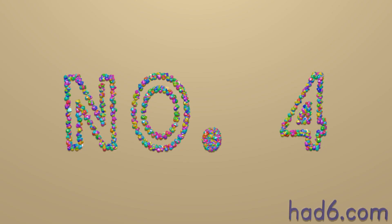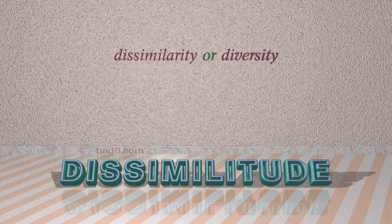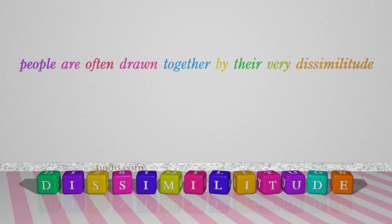Number 4: Dissimilitude, which means dissimilarity or diversity. For example: people are often drawn together by their very dissimilitude.